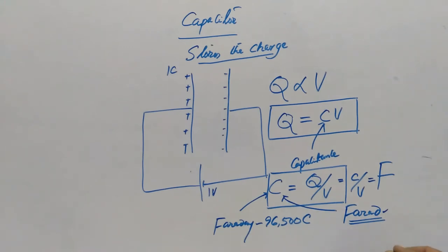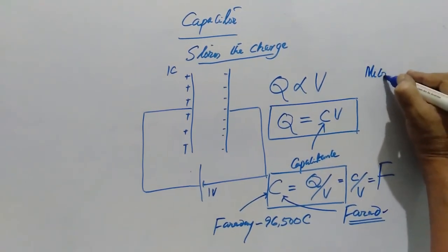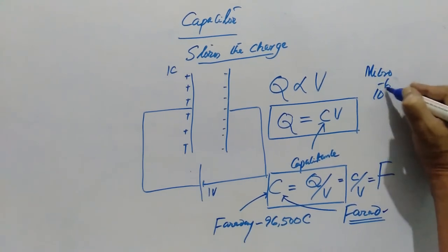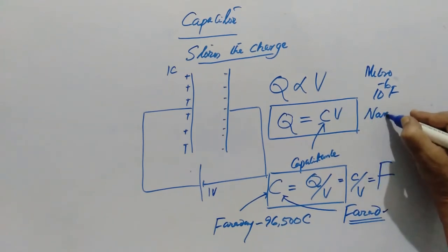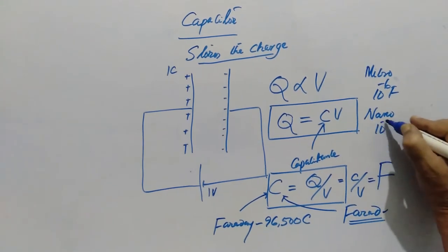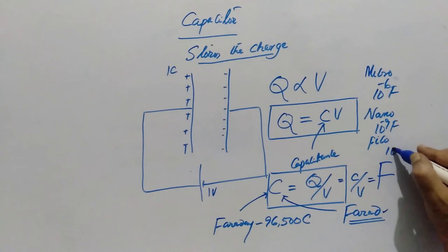In fact, this Farad is very bigger unit. In practical, we use very small units like microfarads, that is 10 to the power of minus 6 Farads, nanofarads 10 to the power of minus 9, picofarads 10 to the power of minus 12 Farad.